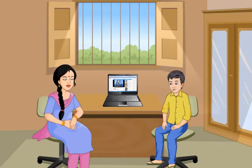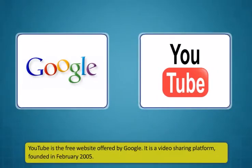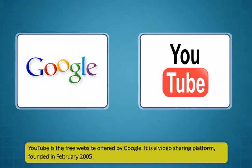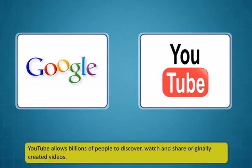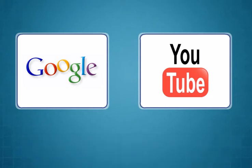Now Rohan, I am sure you will be able to operate on Facebook and Twitter very easily. Sure Didi, I definitely can. Rohan, do you know there are also some websites that offer a lot of information that you can use? No Didi, which are these sites? Well, YouTube and Wikipedia are two of the popular websites through which you can share or get information.